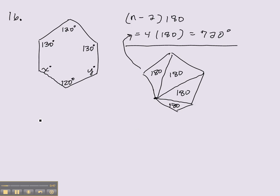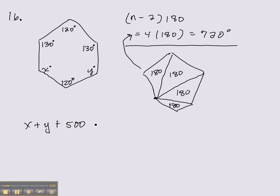So x plus y plus these other angles — 240 and 260, which is 500 — equals 720. So if we subtract the 500, the sum of x and y has to be 220.